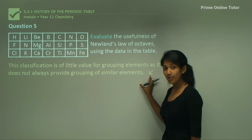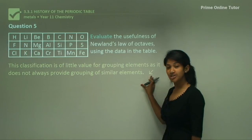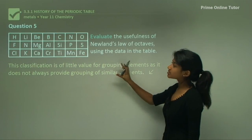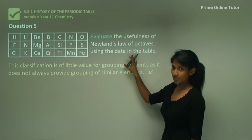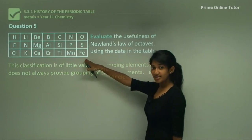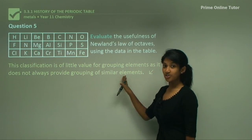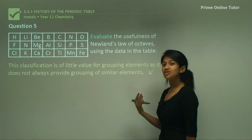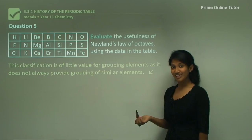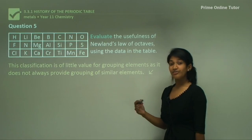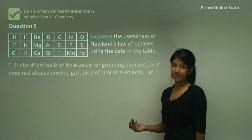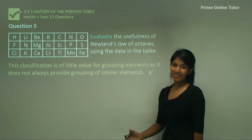That final line is quite important when writing an evaluation — it is your evaluation statement. When a question says 'evaluate,' always add this statement at the end, as it is most likely a three-mark question: one mark for what favors it, one for what goes against it, and one for your evaluation statement. This brings us to the end of the lesson. We covered the scientists who contributed to the periodic table and how our understanding of elements enhanced throughout the years. Thank you.